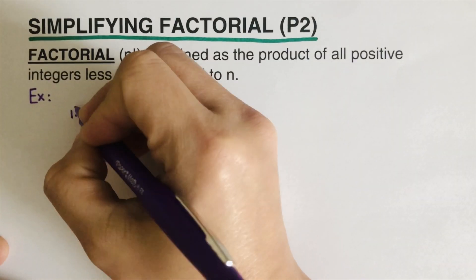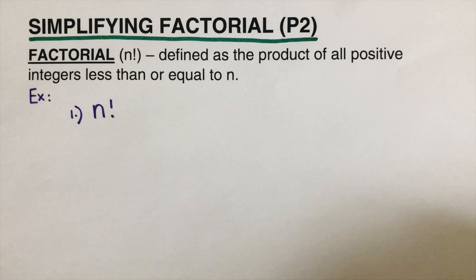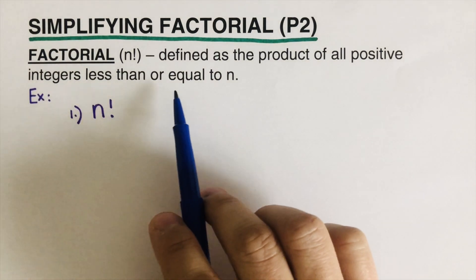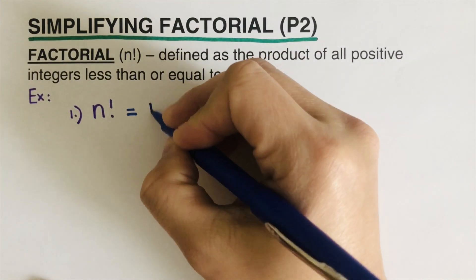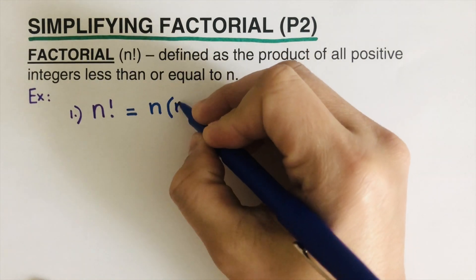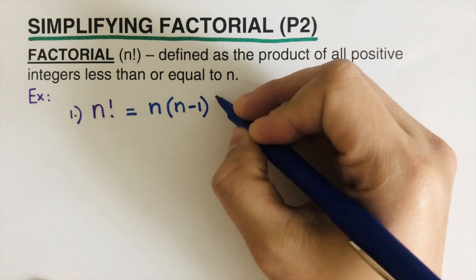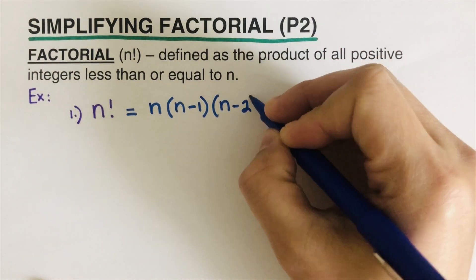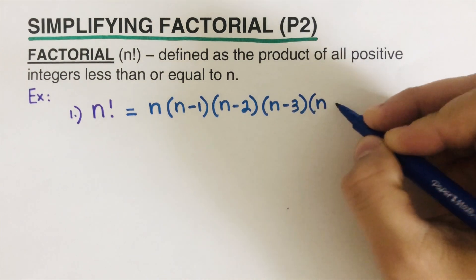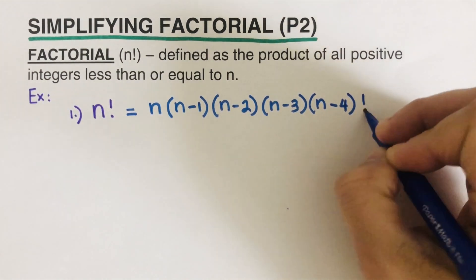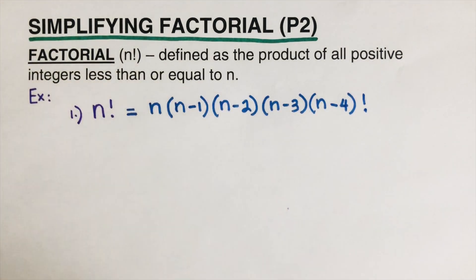For our first example, what is n factorial? Factorial is defined as the product of all positive integers less than or equal to n. So whatever that n is — let's say n was five — we start with n, then the next number would be n minus one, then n minus two, then n minus three, then n minus four, and we write factorial after that, meaning it can continue: n minus five, n minus six, and so on.